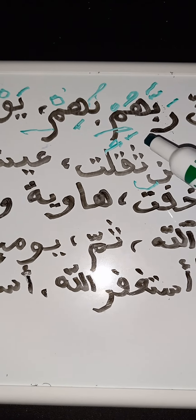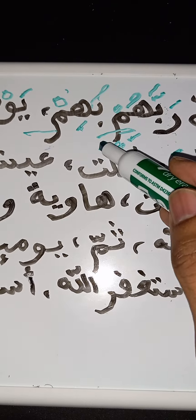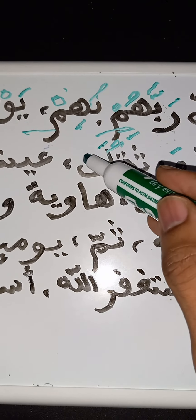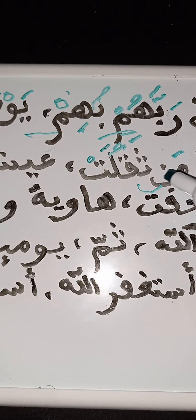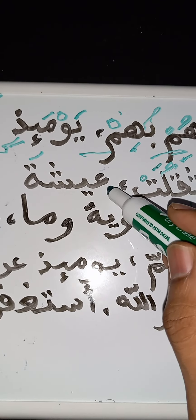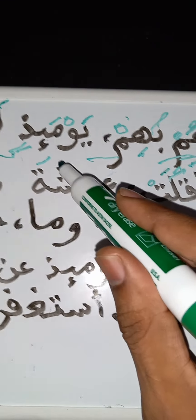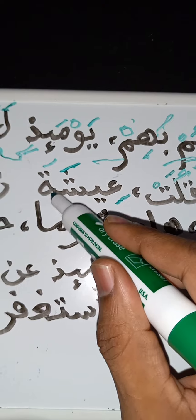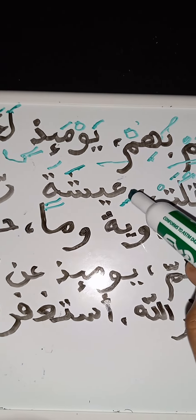Qaf dhamma 'qu,' thaa 'thakuu,' lam fatha 'la' — 'thakulat,' ta sukun at — 'thakulat.' This word is independent from the previous word. So here what do we have: ayn not a hamza, ayn kasra, ya stretching it, ayn shin fatha 'sha' — 'aysha,' ta kasratayni 'tin' — 'ayshatin.'